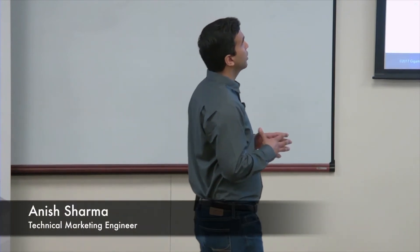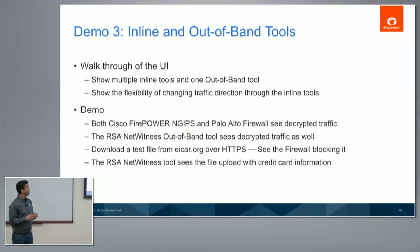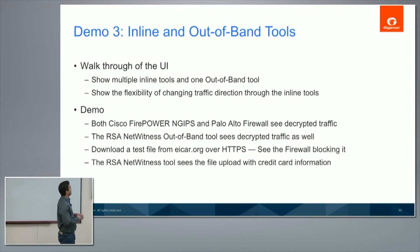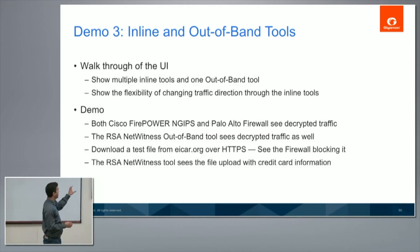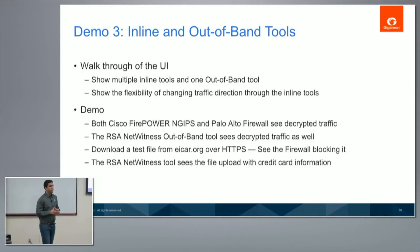I'm going to start with a brief walkthrough of the UI. I have multiple inline tools connected and one out-of-band tool connected as well. I'll show the flexibility of changing traffic direction through the inline tools — for example, traffic flowing through the first tool then the second, with reverse traffic going through the second then first. For the demo, I have two inline tools: a Cisco FirePOWER next-generation IPS and a Palo Alto PA-200 firewall, plus an RSA NetWitness out-of-band tool.